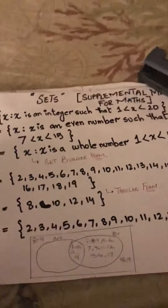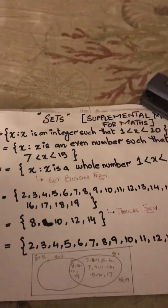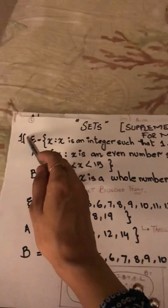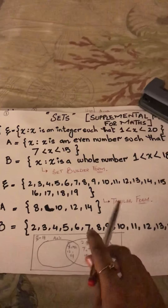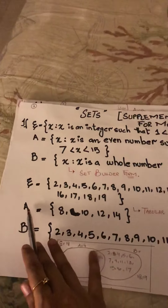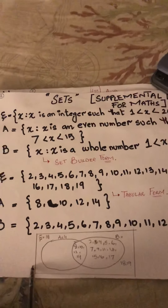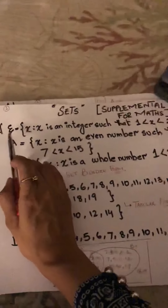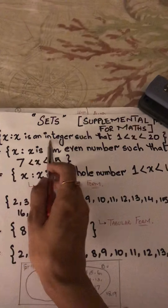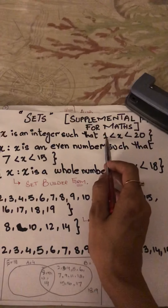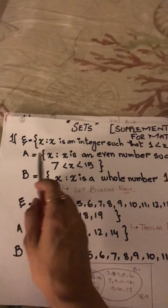Now let's get on to the solution of this question. As it says, the universal set is written in set builder form. I have also written down the whole universal set for you. The question says that the universal set X is such that X is an integer greater than 1 but lesser than 20, and then the brackets are closed.